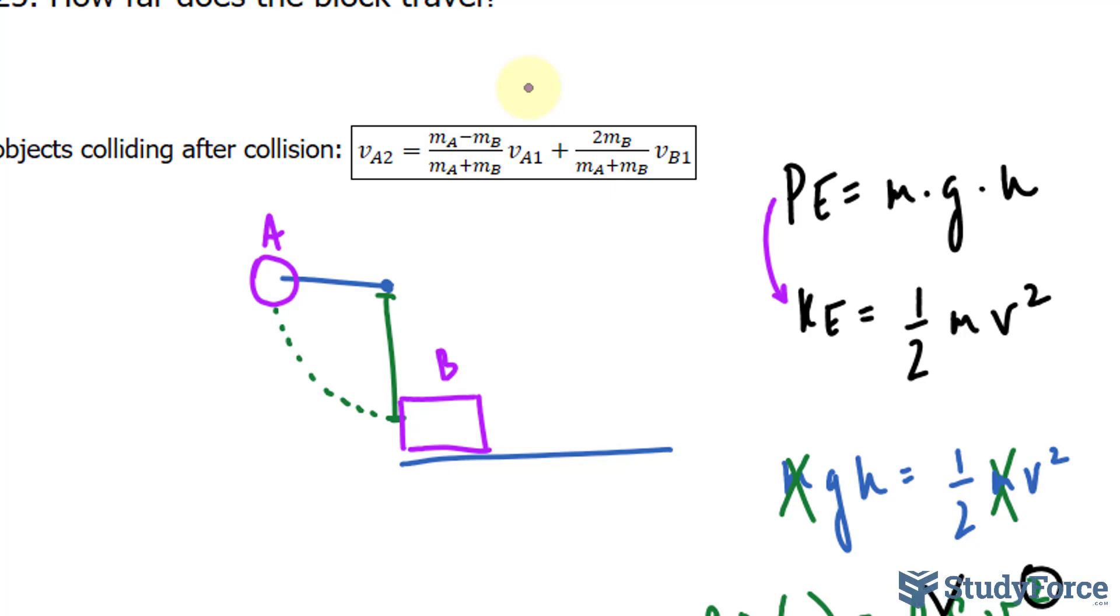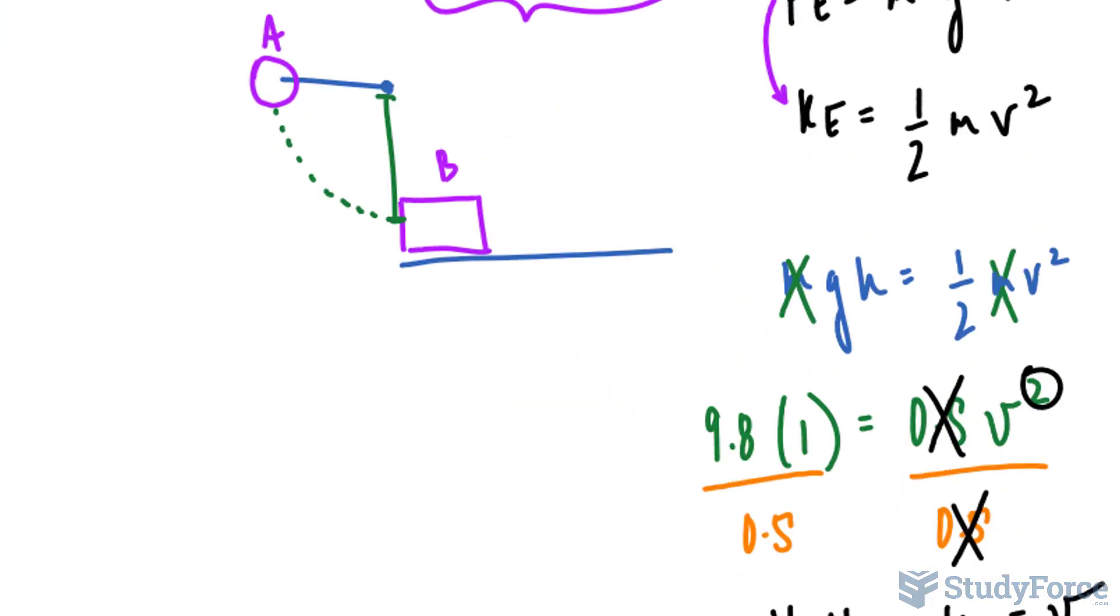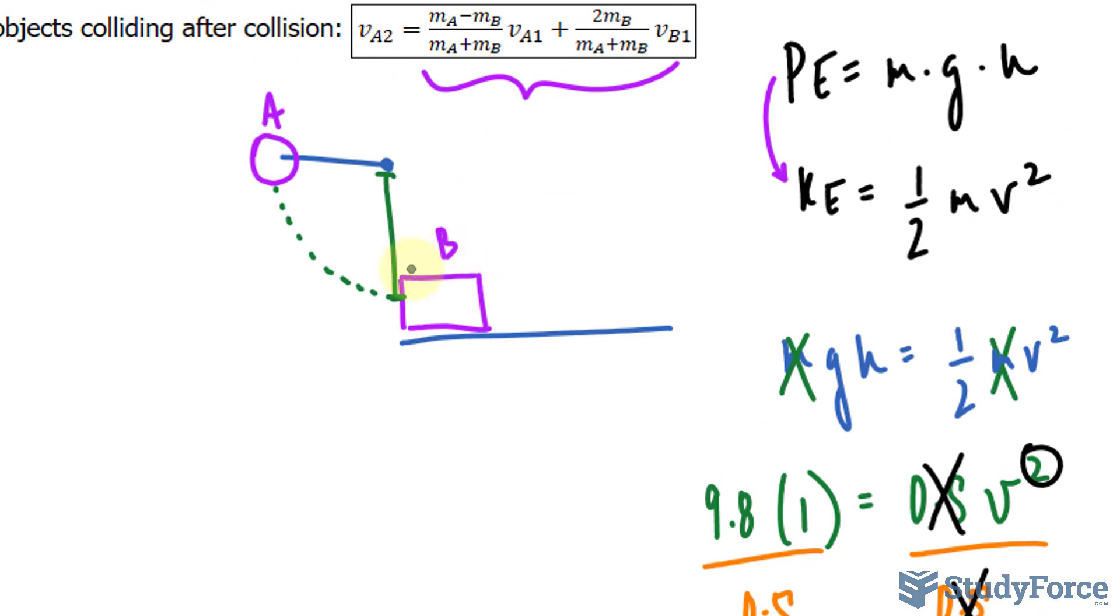So if we read this formula, it is telling us the velocity of this steel ball after the collision is equal to all this. But we're not looking for that. We're actually looking for the speed in which this block moves after the collision. Therefore, we're looking for VB2. To modify this formula so that we have VB2, it's not that hard.